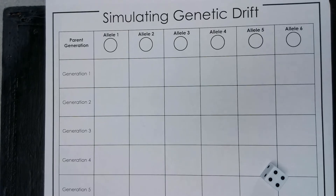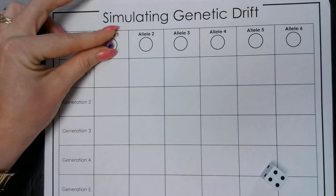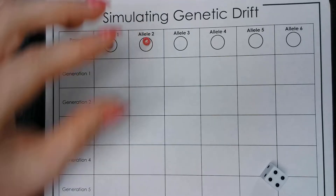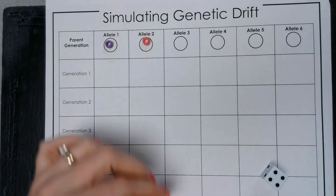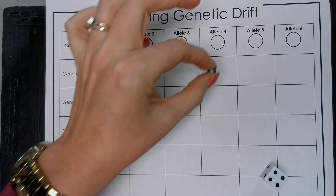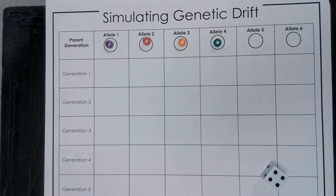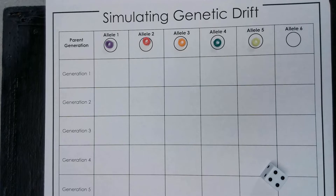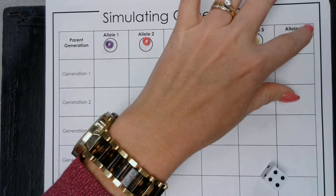We're going to start by selecting six different color beads, which are just going to represent alleles within the population — different alleles. These are six different colors. We've got a purple, a pink, an orange for allele three. I want to use green for allele four, yellow for allele five, and blue for allele six.